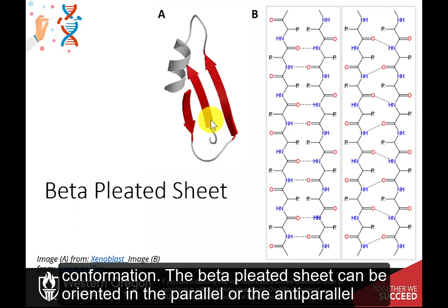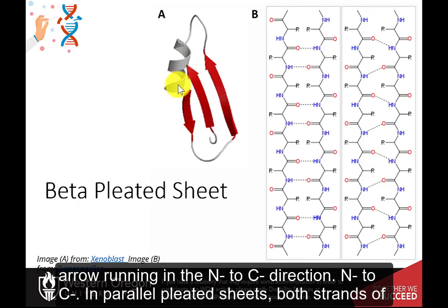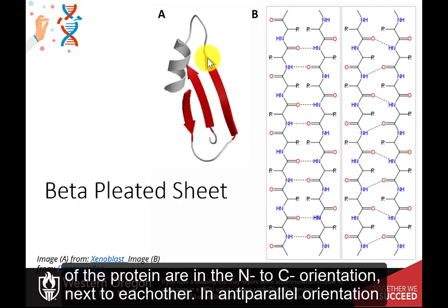The beta-pleated sheet can be oriented in the parallel or the anti-parallel orientations. The direction of the arrow indicates the orientation of the protein, with the arrow running in the N to C direction. In parallel pleated sheets, both strands of the protein are in the N to C orientation next to each other.